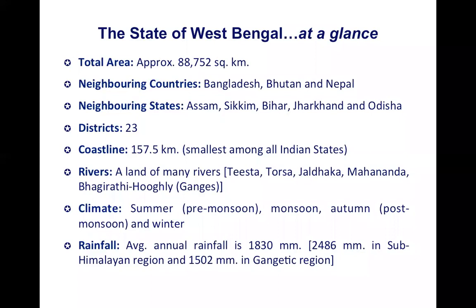Regarding river systems, the state has many rivers, of which the Bhagirathi-Hooghly is the main river. It derives from the Ganges, and after the division near Farakka, one branch enters Bangladesh as the Padma and the other flows as the Bhagirathi-Hooghly. In the northern part there are rivers like Teesta, Torsa, Jaldaka, and Mahananda, and in the drier parts there are rivers like Damodar, Ajoy, Kangsabati, etc.